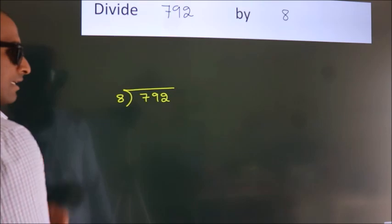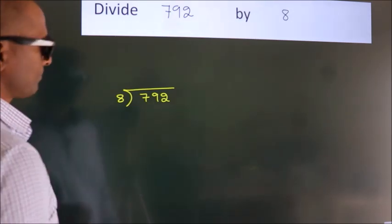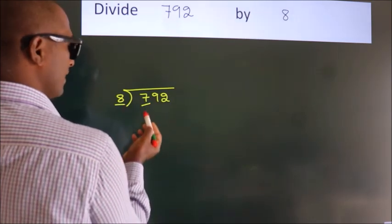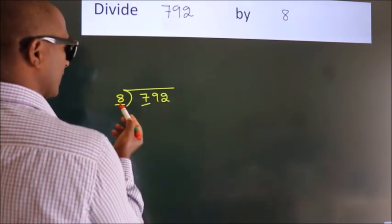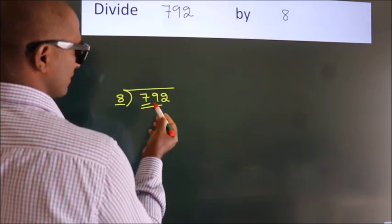This is your step 1. Next, here we have 7, here 8. 7 is smaller than 8, so we should take two numbers: 79.